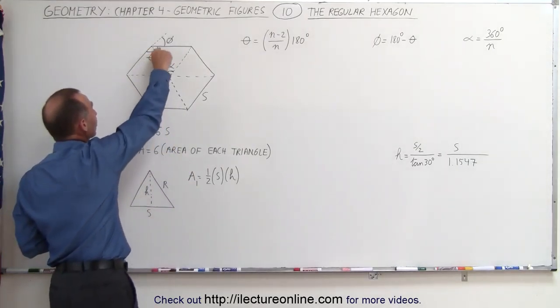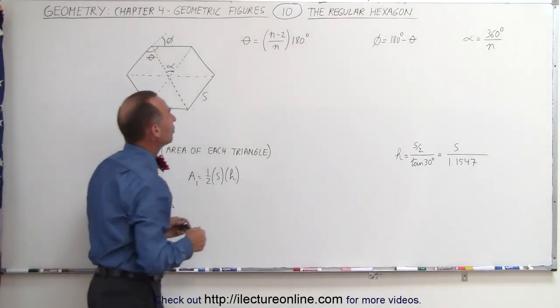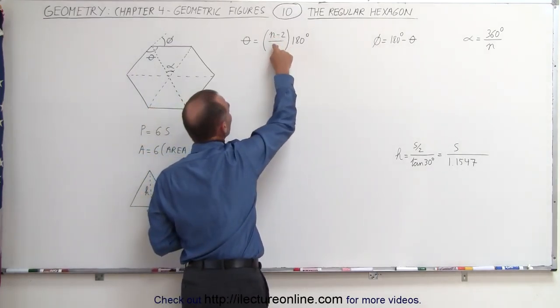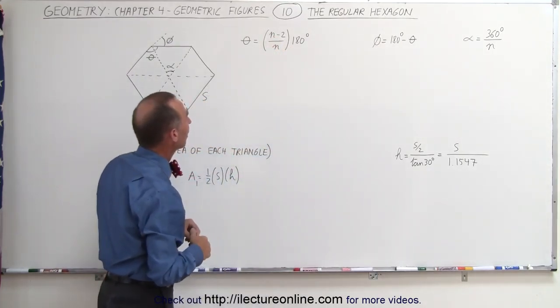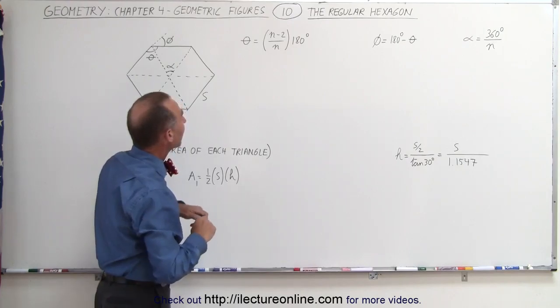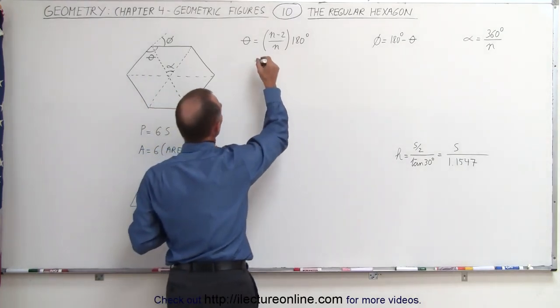So first, let's find the interior angle theta. It's going to be equal to the number of sides minus 2 divided by n, just like for any regular polygon. And to do that, this is equal to, in this case...